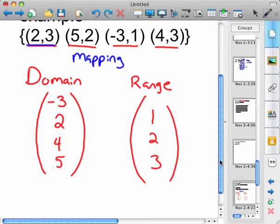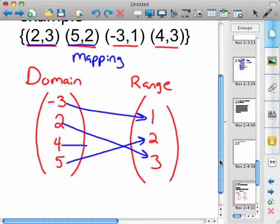Input of two gives an output of three. So that's what that mapping looks like. Input of five gives an output of two. Input of negative three gives an output of one. And input of four gives an output of three.